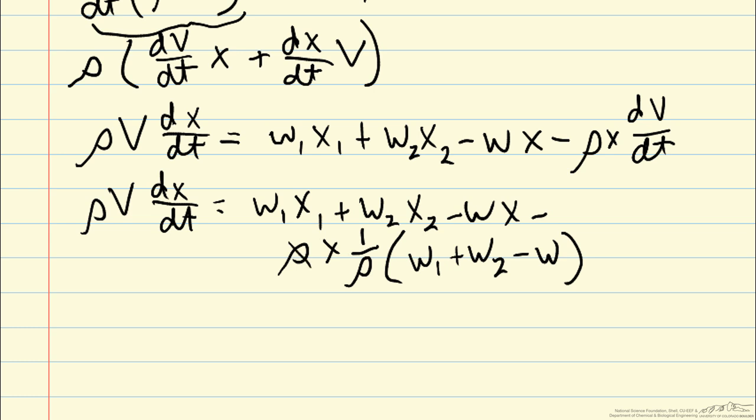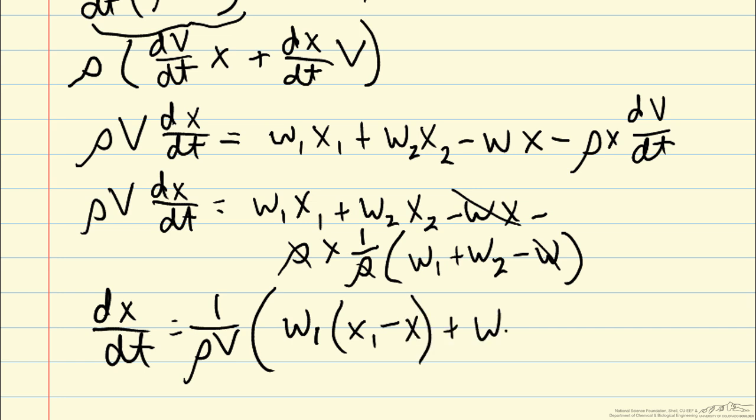We can cancel those rhos. And we also can cancel this WX with this W and X out here. And that will allow us to get our final equation for dX dt, which is 1 over rho V times W1 times X1 minus X plus W2 times X2 minus X. So this equation for dX dt, along with our previous equation for dV dt, which we'll rewrite here,